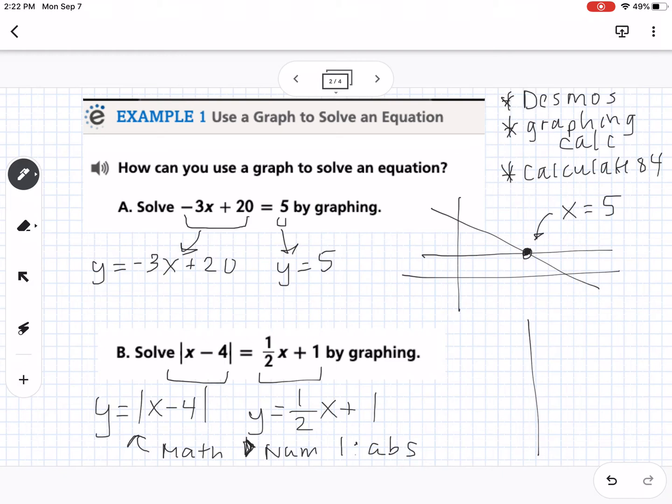So, this graph, if you were to graph it, you get the absolute value, which is the V shape, and then you get a line. So, you're going to have two solutions. And you should get x equals 2 and x equals 10. So, again, if you want individual help on whatever technology you're using to find these, just let me know, and I can walk you through it.